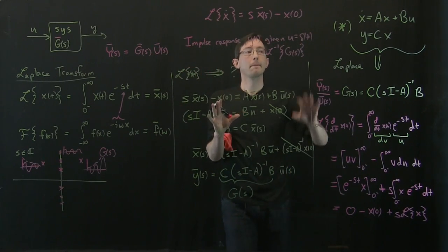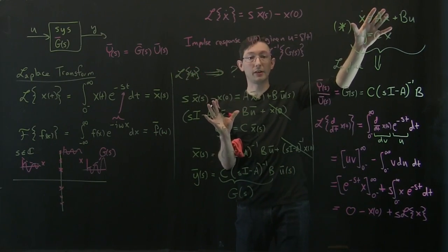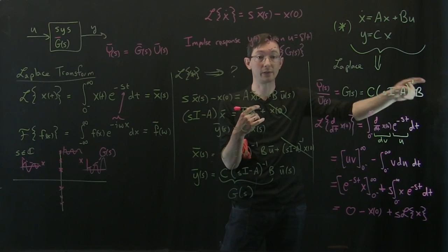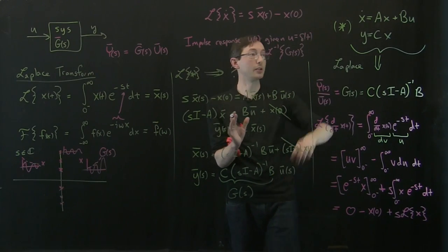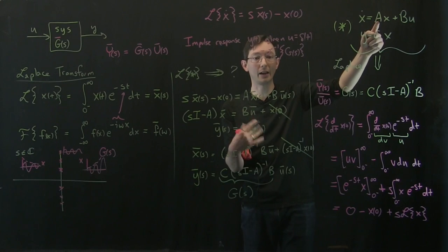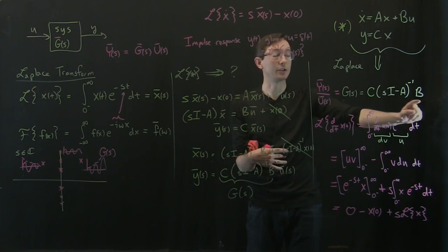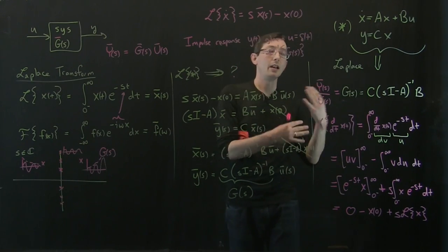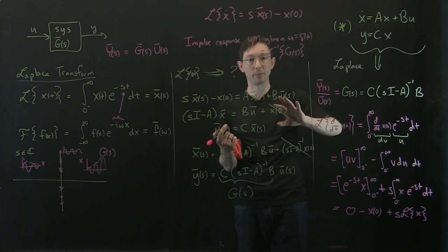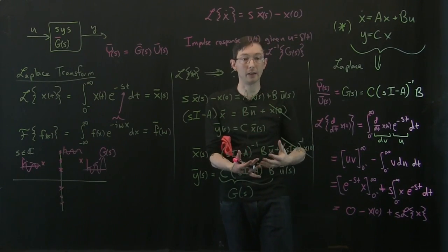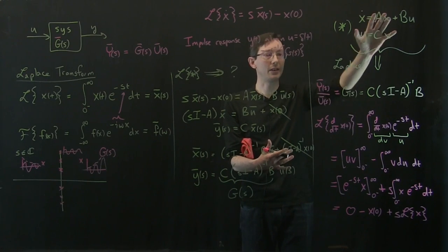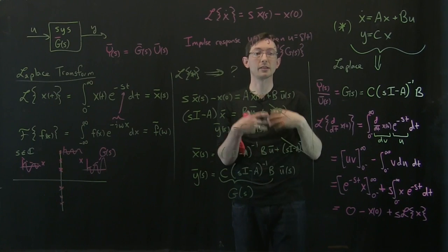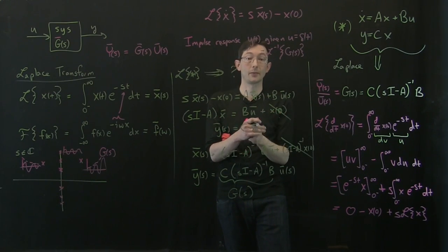So we have two representations for our system: a state space system, where we can look at eigenvalues, eigenvectors, and stability; and a frequency domain transfer function, where we can look at properties like robustness, sensitivity, and how the system handles different types of noise and disturbances. This is a very graphical and intuitive way to represent systems that complements the state space approach. We'll use this to design controllers and assess whether they are robust.